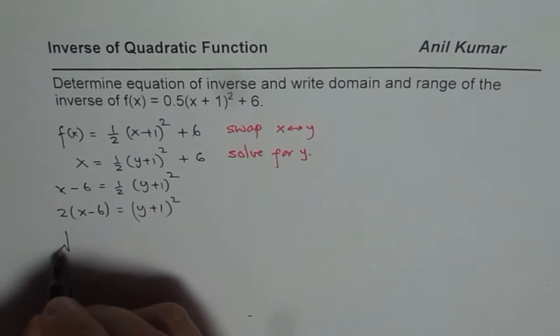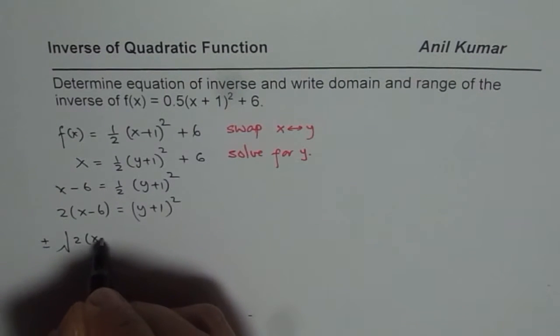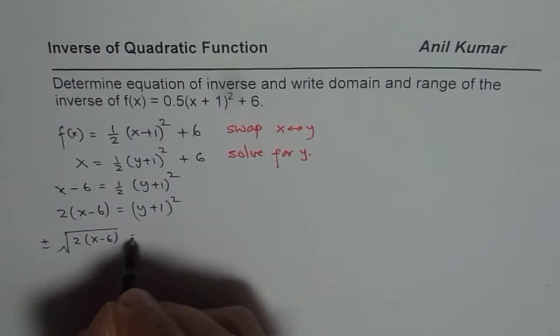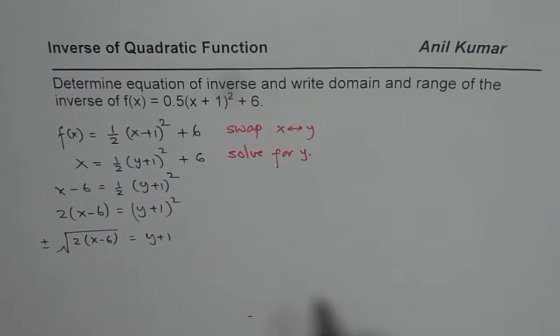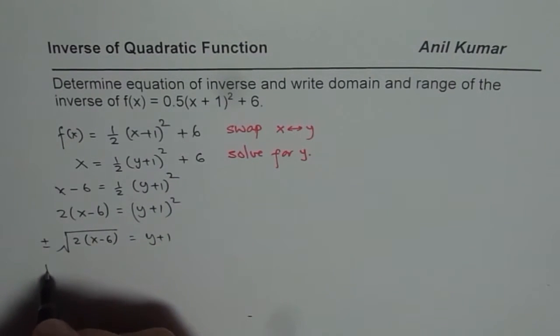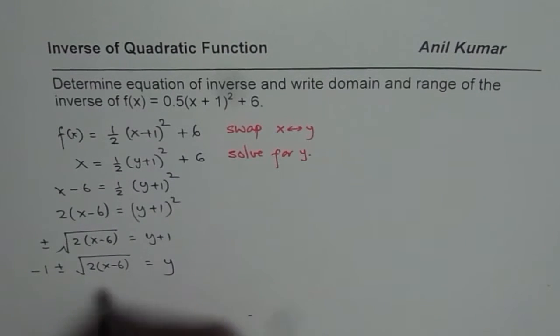Now square root. So whenever you square root do plus and minus. √[2(x - 6)] equals to y + 1. And now take away 1 this side. So -1 ± √[2(x - 6)] equals to y.